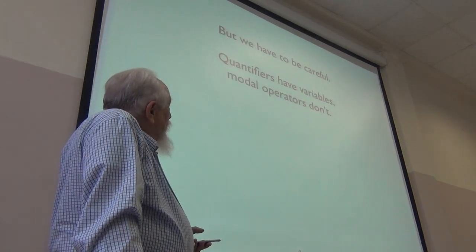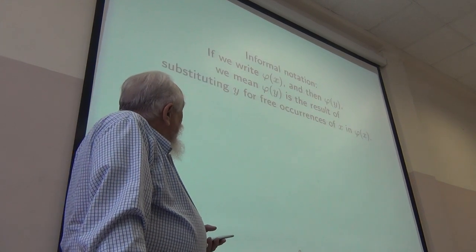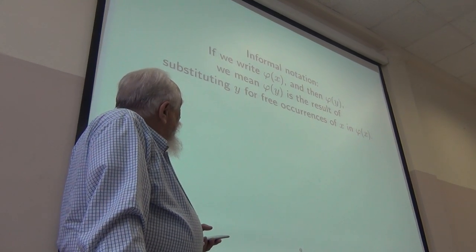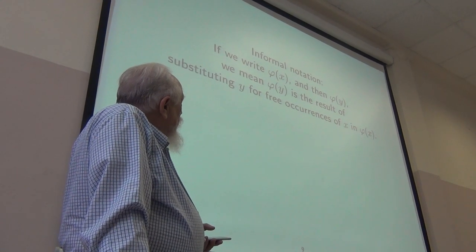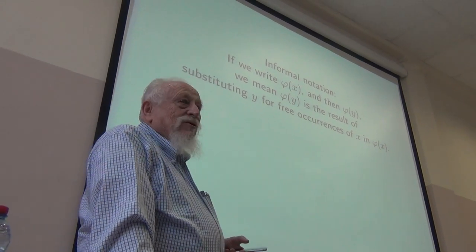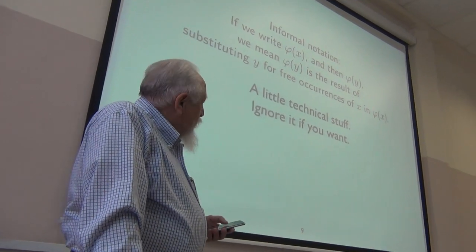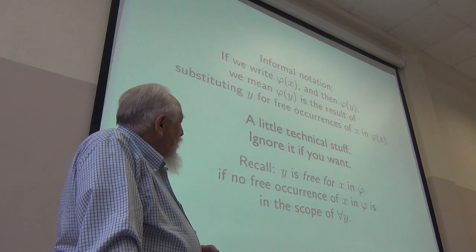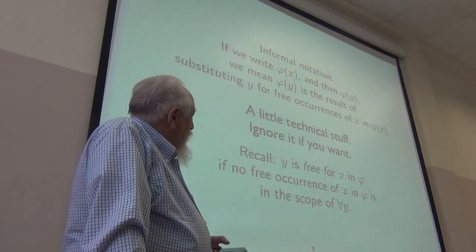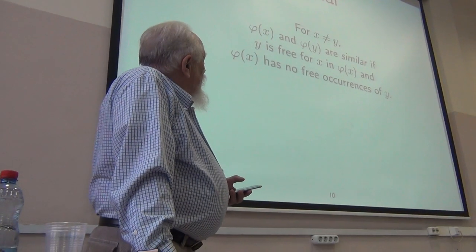But, where, if the question is, what are these things peculiar to quantifiers? They have variables associated with them. Modal operators don't. And we'll see what that does. Now, I'll be using this kind of familiar and formal notation. If I write phi of x and later on phi of y, y is the result of replacing free occurrences of x by y. And there's some technical stuff here that you're probably all familiar with, but just to establish the terminology, y is free for x in a formula if no free occurrence of x is in the scope of a quantifier y. So, it means that substituting y's for x's isn't going to accidentally bind anything.